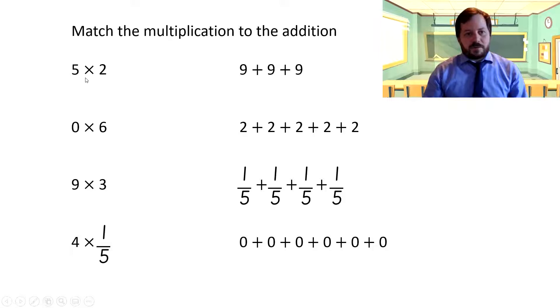Okay, so five times two means two fives or five twos. One, two, three, four, five, five twos. Zero times six means either no zeroes or no sixes. So that's here.